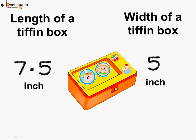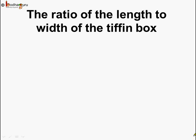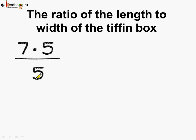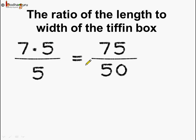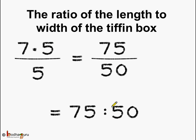Now let us see another example. This is a tiffin box and the length of the tiffin box is 7.5 inches and the width is 5 inches. What is the ratio of the length to the width of the tiffin box? It is equal to 7.5 by 5. If you know about decimals, we can remove this decimal and add a 0 in the denominator, so this gets changed to 75 by 50. The ratio of length to the width of the tiffin box is equal to 75 by 50.